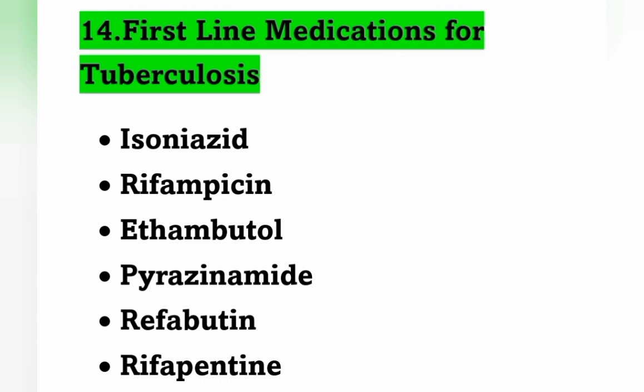First-line anti-tubercular medications include Isoniazid, Rifampicin, Ethambutol, Pyrazinamide, Rifabutin, and Rifapentine — all are included in first-line medications.